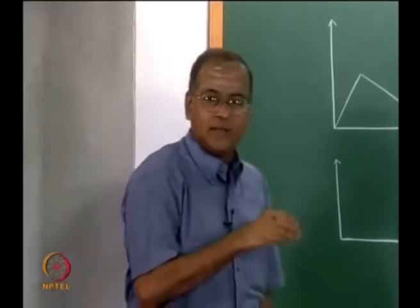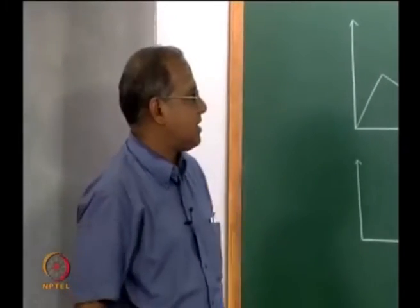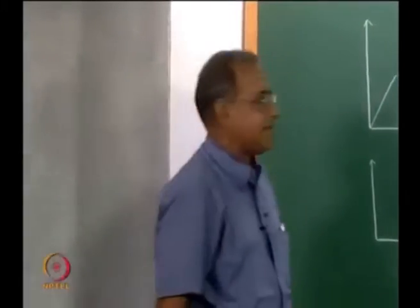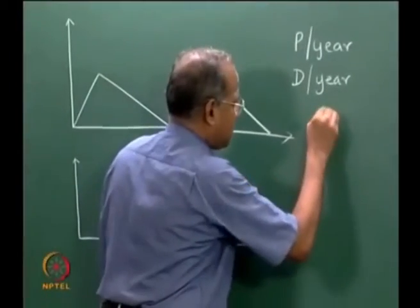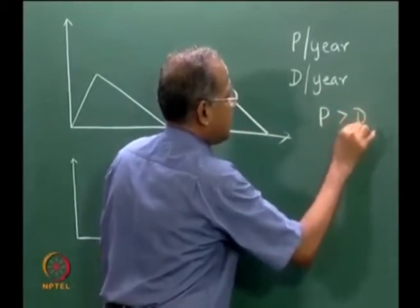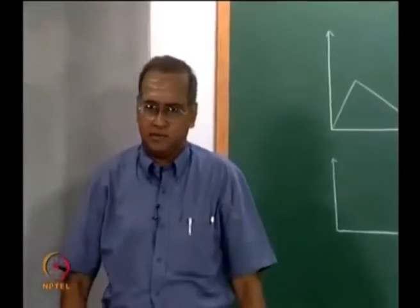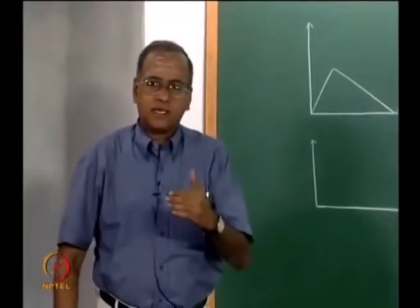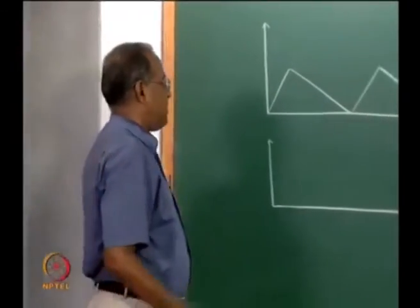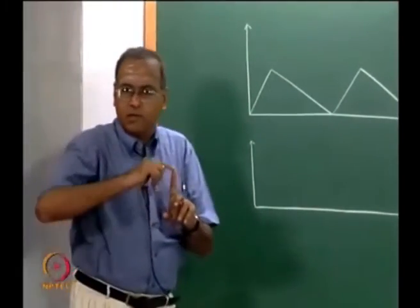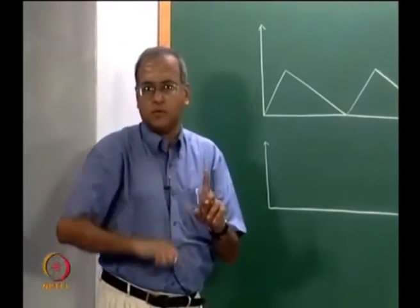Obviously, in order to meet the demand, our production rate p has to be greater than or equal to d, or most of the time p is greater than d. When p is greater than d, we produce this item and while we produce this, we also consume. Since the production rate is higher than the consumption rate, there is an inventory buildup at the rate of p minus d, and we produce up to a particular time t1.